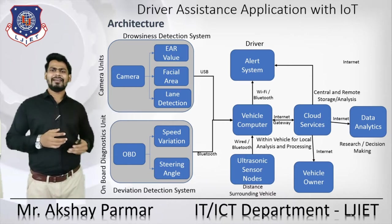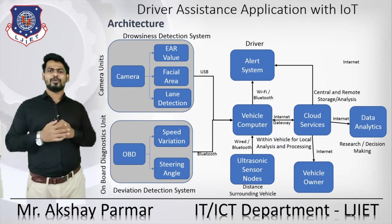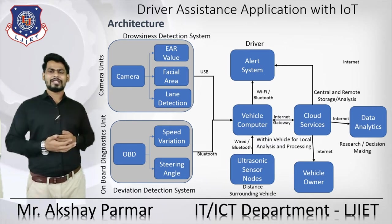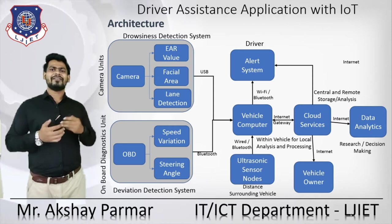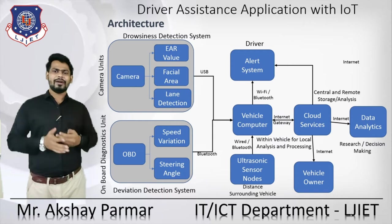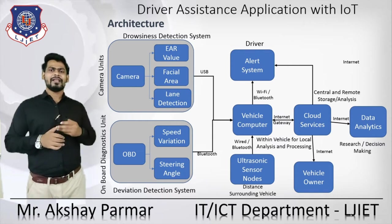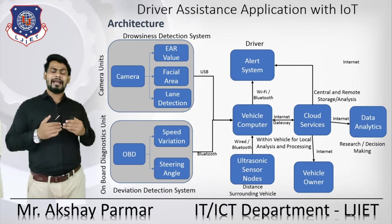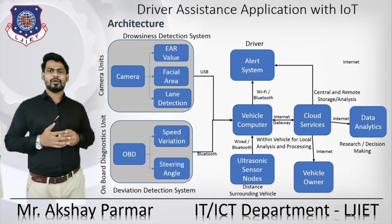With the help of the OBD, we can monitor the speed variation as well as the steering angle. We can integrate both data sources and do some processing. The camera unit can be connected via USB and the OBD via Bluetooth — it can be wired or wireless. This data is fed to the vehicle computer, which takes appropriate action. If a deviated driver is found, an alert system will alert the driver to keep an eye on the road.